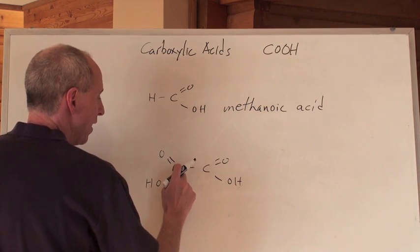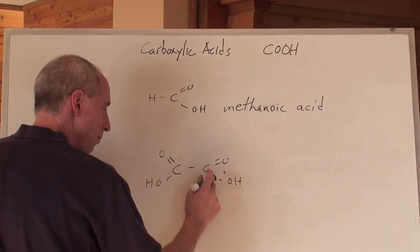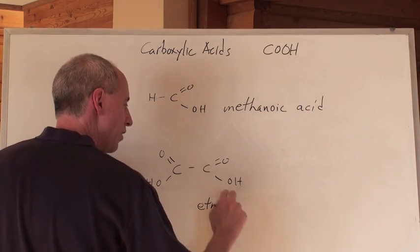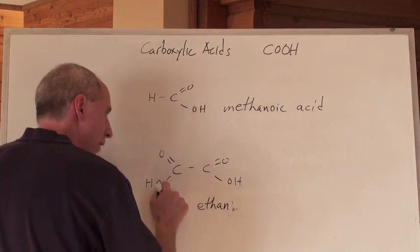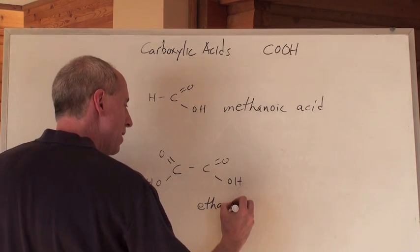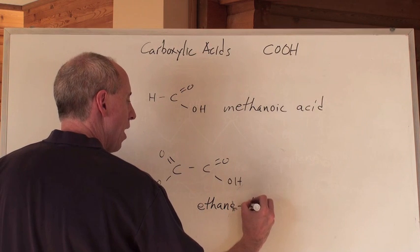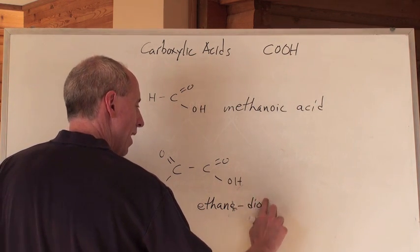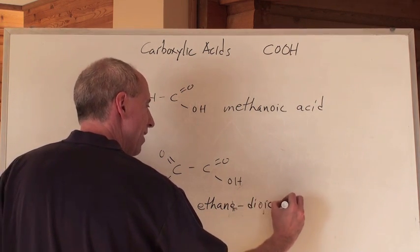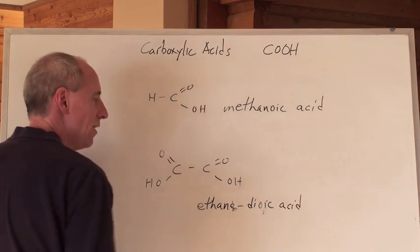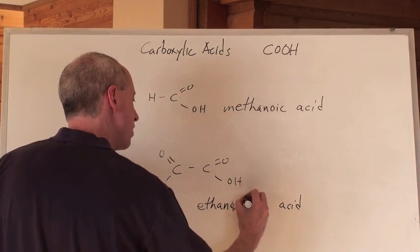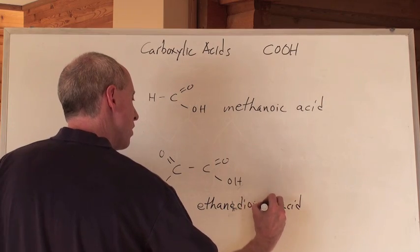This one here would be called what? It's two carbons long, so it's eth- — ethane, drop the E, add -oic acid — but there are two COOH groups, one at each end. So you keep the E and add di-oic acid. So it's ethane dioic acid. No hyphen needed because there are no numbers to specify position.